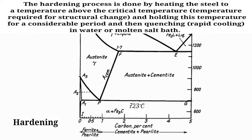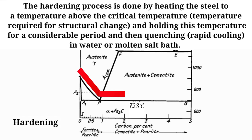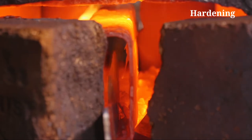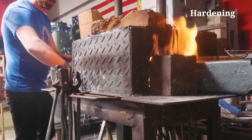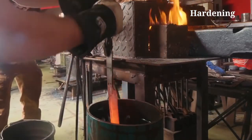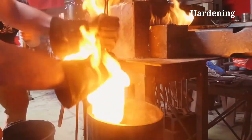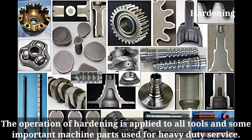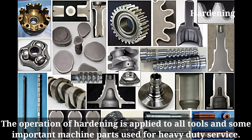The hardening process is done by heating the steel to a temperature above the critical temperature — that is, the temperature required for structural change — and holding at this temperature for a considerable period, and then quenching or rapid cooling in water or molten salt bath. The operation of hardening is applied to all tools and some important machine parts used for heavy duty service.